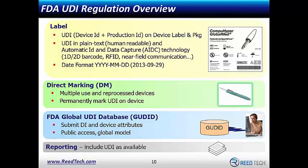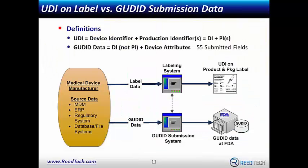This slide points out the differences between UDI labeling data and GoodID data. Manufacturer data sits in many different repositories. Label data goes through a labeling system and ends up on the product or package, while GoodID data goes into a GoodID submission system and then through the electronic submission gateway to the FDA. If it passes the FDA's validation processes, that information goes into the GoodID. There are roughly 15 common fields between these two data sets.